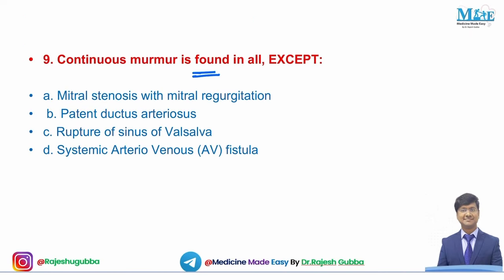Next question: continuous murmur is found in all except — MS with MR, PDA, ruptured sinus of Valsalva, or systemic AV fistula. PDA, ruptured sinus of Valsalva, and systemic AV fistula all produce continuous murmurs. In MS with MR: MS gives a mid-diastolic murmur and MR gives a pan-systolic murmur — not a continuous murmur. The answer is mitral stenosis with mitral regurgitation.